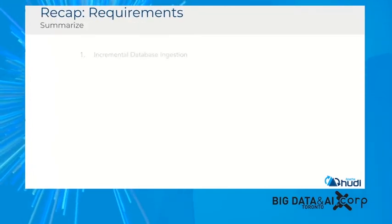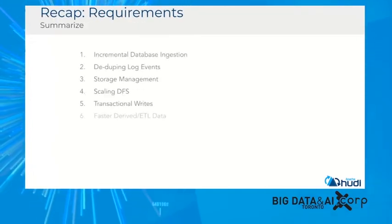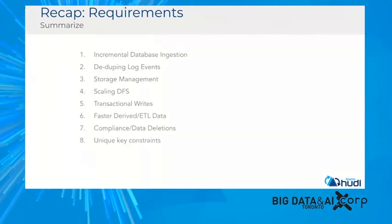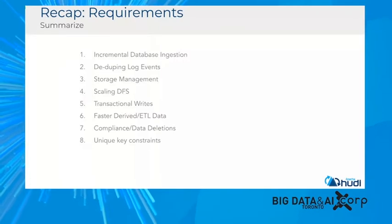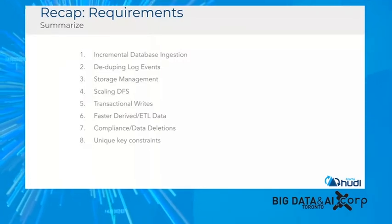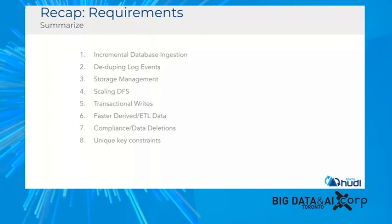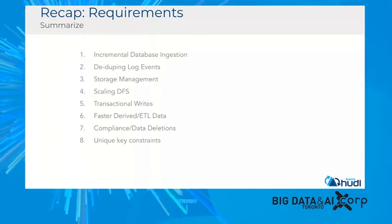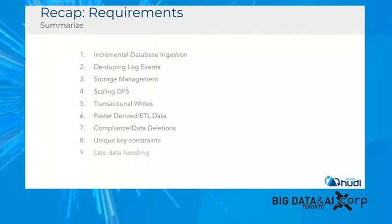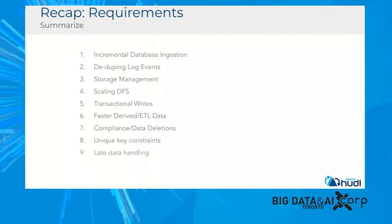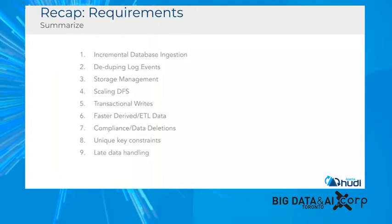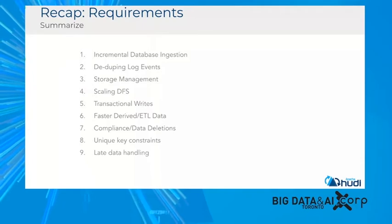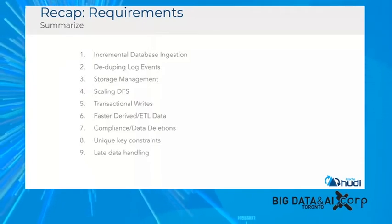Summarizing all of these requirements: you want incremental database ingestion to ingest changelogs, you want to dedupe log events, scale the distributed file system, apply these operations for all your datasets whether raw or derived, and be able to do compliance without sacrificing scan performance. And given the nature of data ingestion, you can have late-arriving data — what if a row was updated but comes in late? How do you handle those kinds of late-writing scenarios?